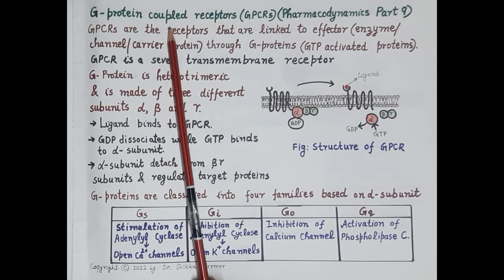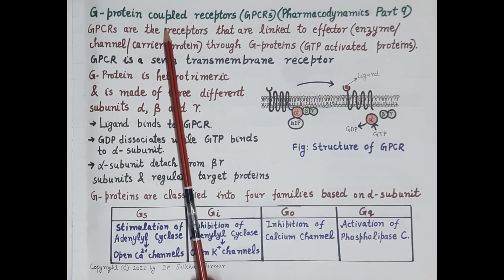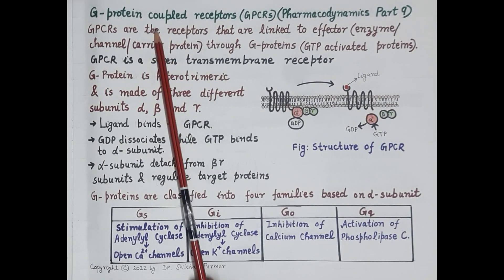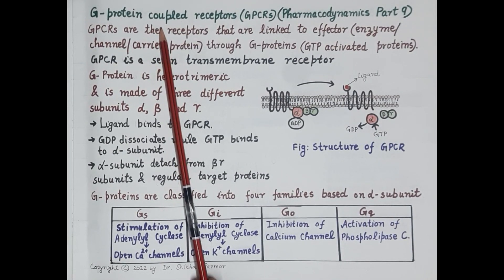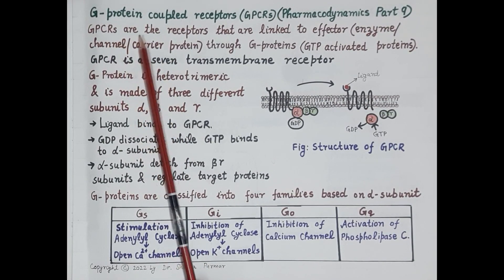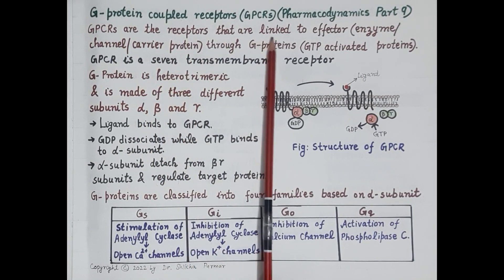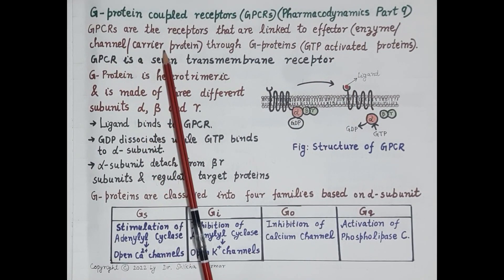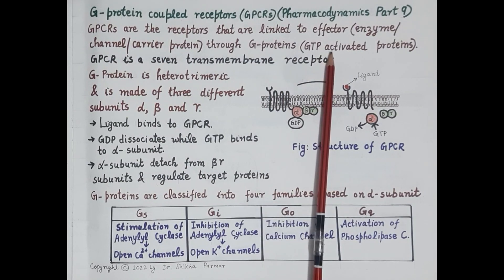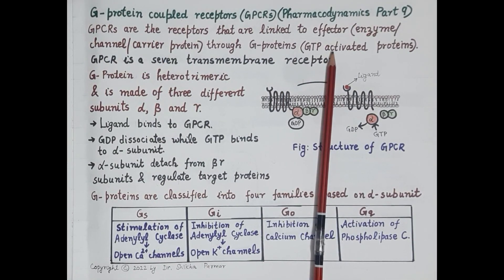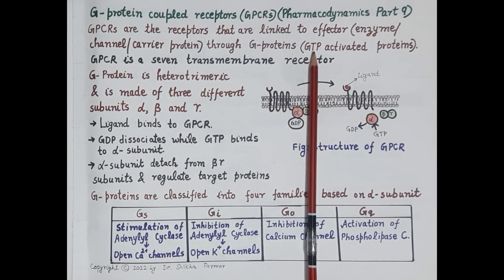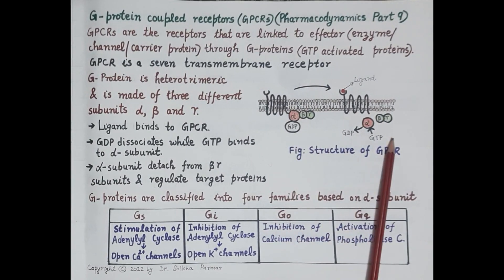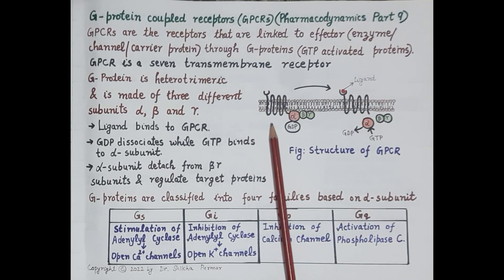Signal transduction is a process by which an external signal brought by a ligand to a target cell is converted to a biological or physiological response. G protein coupled receptors are the largest class of cell surface receptors — almost 50% of drugs produce their action by binding to them. These receptors are linked to effectors such as enzymes, channels, and carrier proteins through G proteins, which are GTP-activated proteins, where GTP stands for guanosine triphosphate.